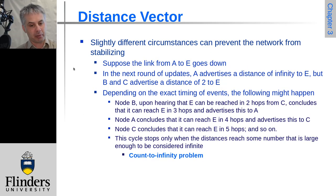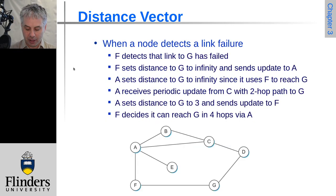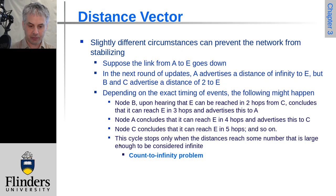And it gets a little bit worse than that. Let's imagine that the link from A to E goes down. So this is the link from here to here. In the next round of updates, A is going to set its distance to infinity to E. B and C meanwhile are still advertising a cost of two to E, because they think they can go back via A to get to E.